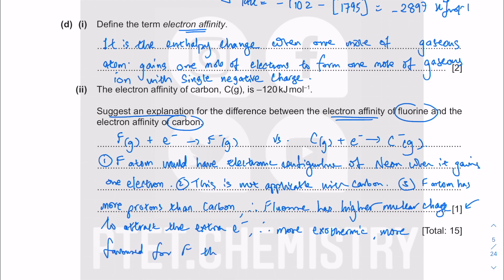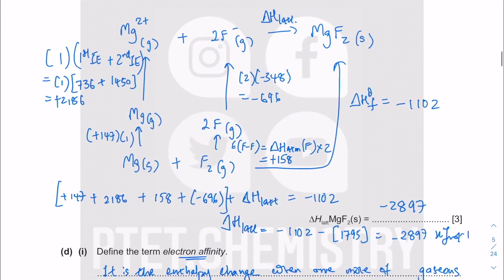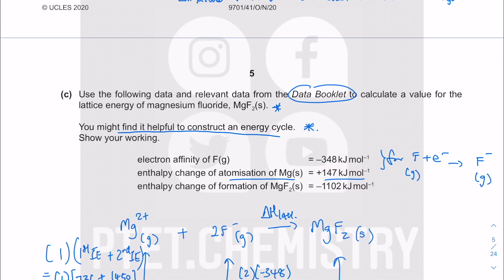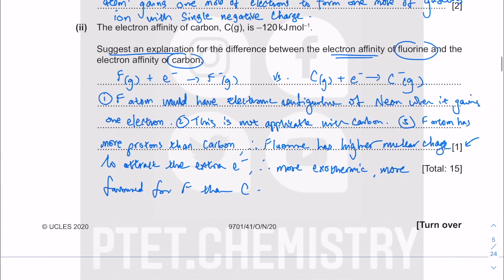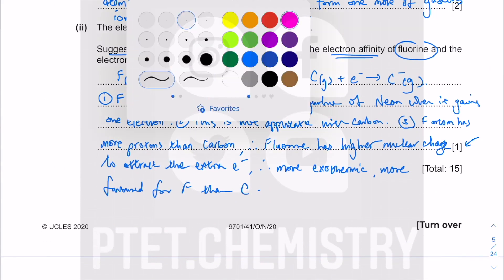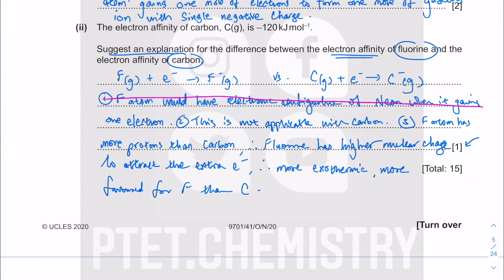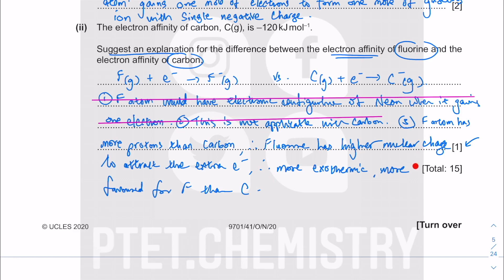Fluorine has a first electron affinity of around minus 350 kJ/mol, which reflects the more favored process compared to carbon. This also explains electronegativity: fluorine is more electronegative than carbon as a result of comparing the number of protons giving the nuclear charge, the electrons providing the shielding, and the resulting effective nuclear charge.